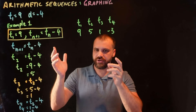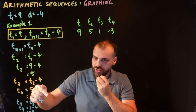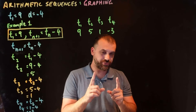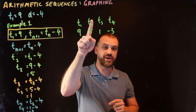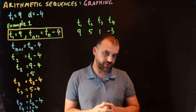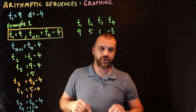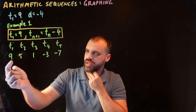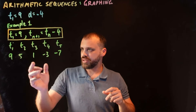In the last video we looked at arithmetic sequences and how to use a recurrence relation to come up with the sequence itself. In this video we're going to take this sequence and graph it. There's our recurrence relation and there are our first five terms — I've added a term.